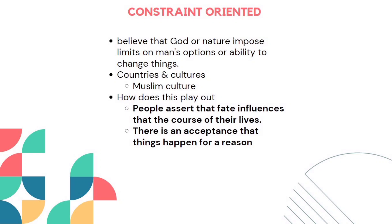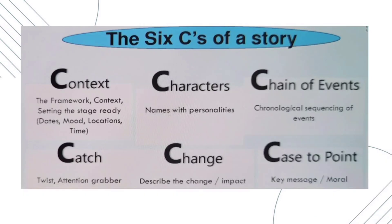The next and last topic for articulation is the six C's of a story. This is an important topic with respect to the exam, and it is also very simple and easy. The six C's are: context, characters, chain of events, catch, change, and case to point. Think of it as a movie — when a movie starts, it describes a context: what is the place, what is the mood, what is the issue.